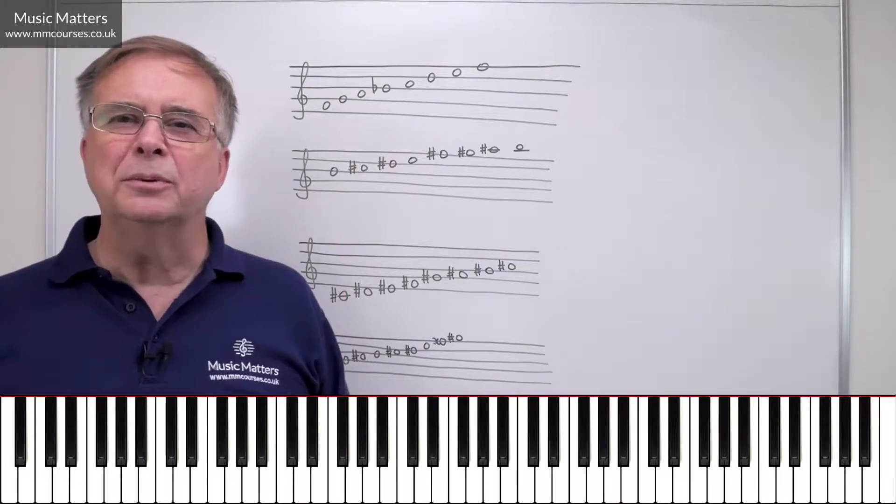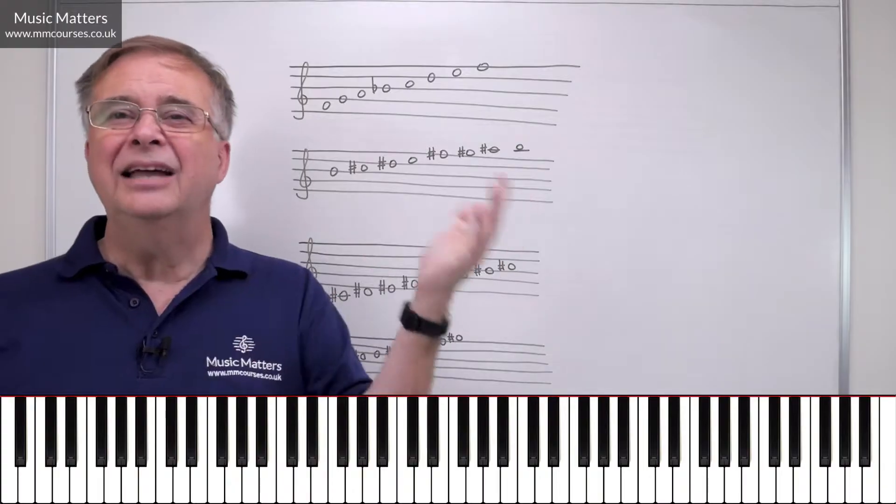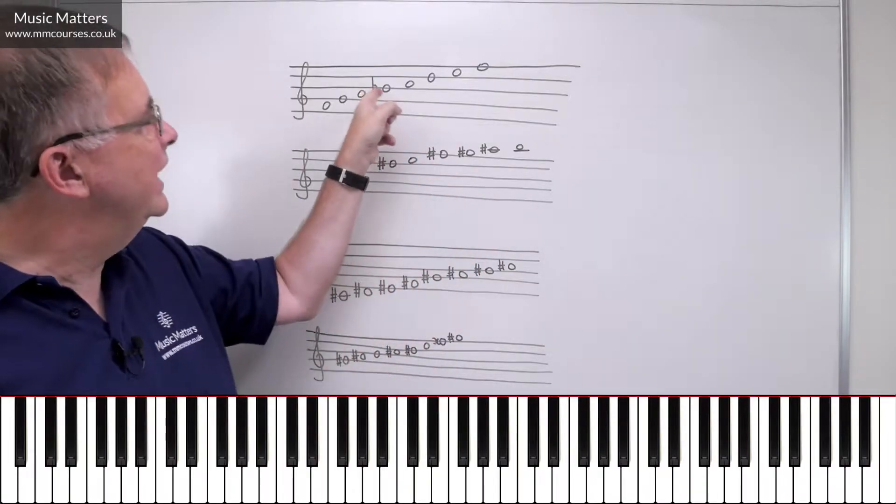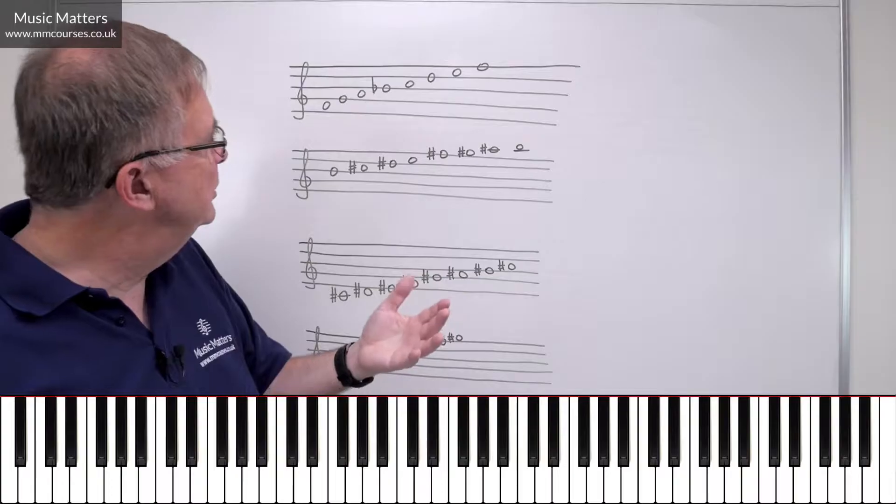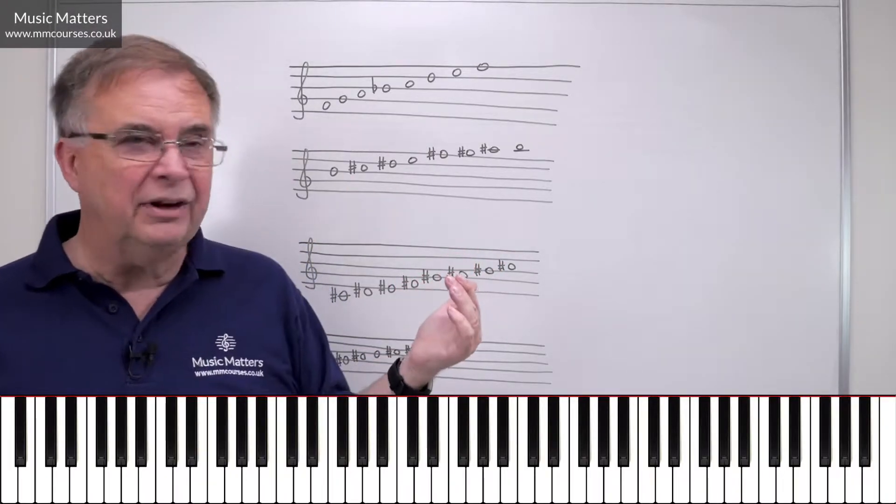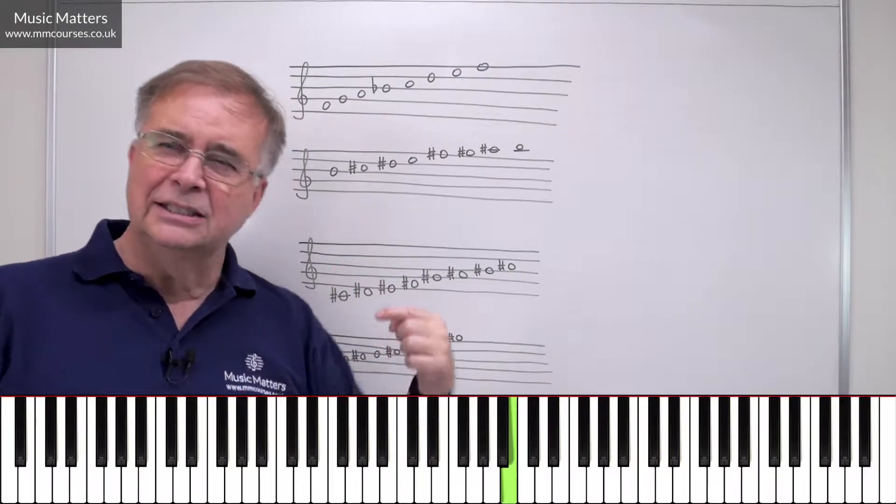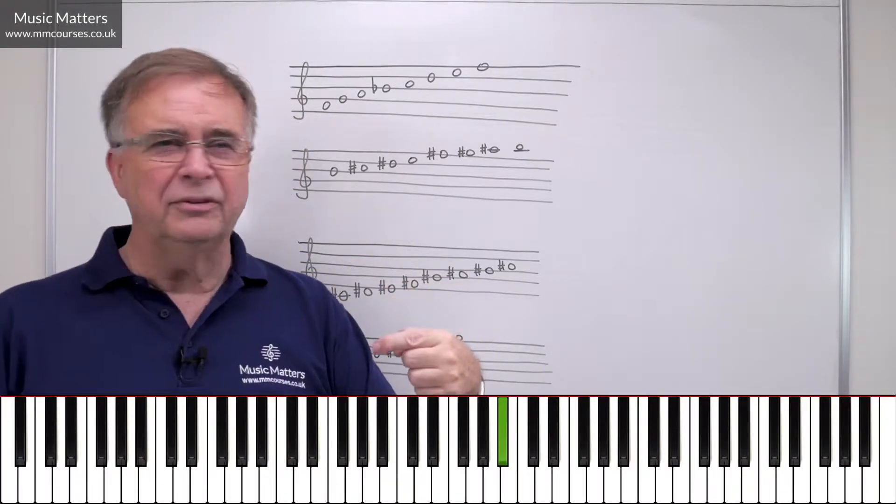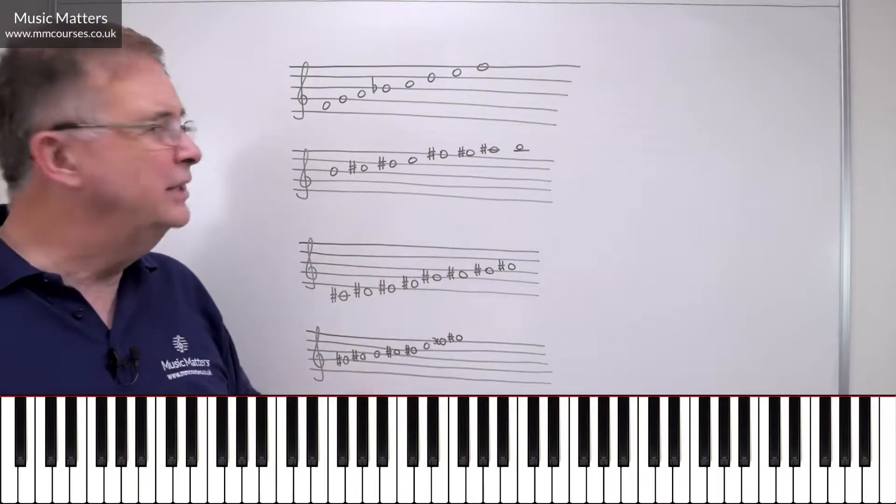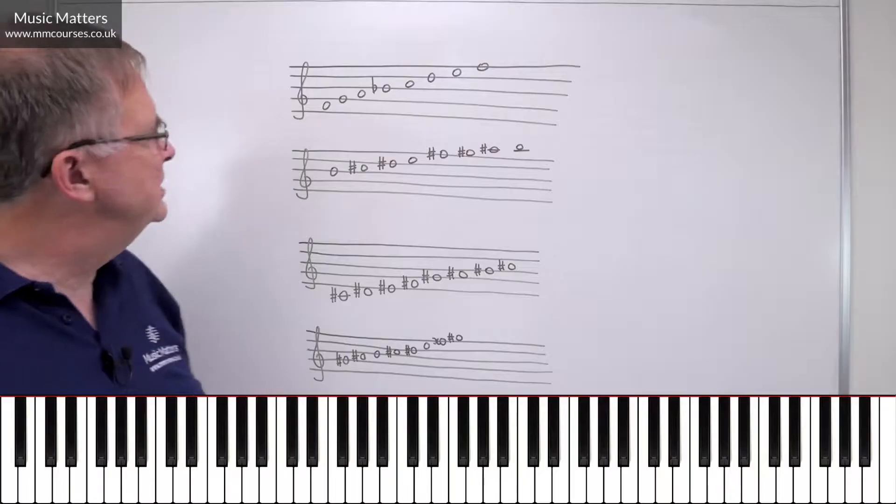So if you work on the principle that you need one of each letter of the scale, that then determines that this has to be called B-flat. It's not going to be called A-sharp. It could, of course, be called C-double-flat, because this is C, and B is C-flat, so B-flat is also C-double-flat. But again, there's no logic in that, because then we'd have a C-double-flat and a C, so there's no point in doing that.